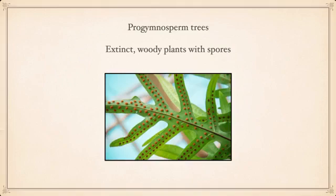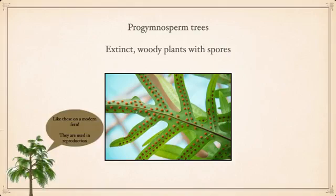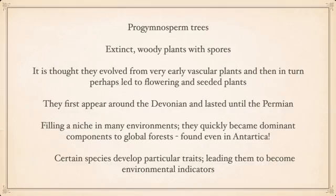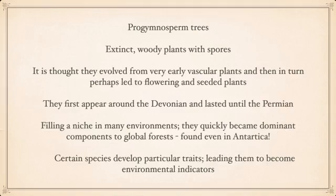Pro-gymnosperm trees are extinct woody plants with spores — like those spores on a modern fern. Spores are used in reproduction. It's thought that these trees evolved from very early vascular plants and then in turn perhaps led to flowering and seeding plants. They first appeared around the Devonian and lasted until the Permian. At the time, there was nothing like them in the world, so they filled a huge niche in many environments and quickly became the dominant components of global forests, being found even in Antarctica.